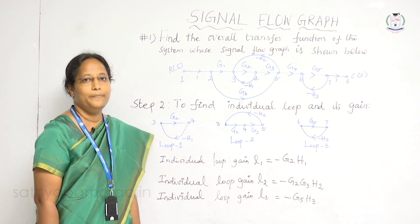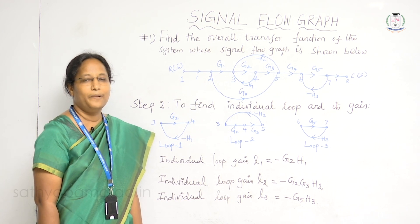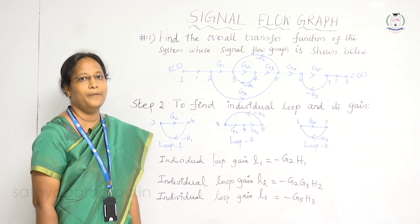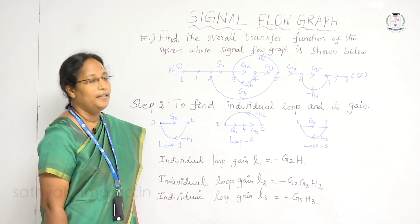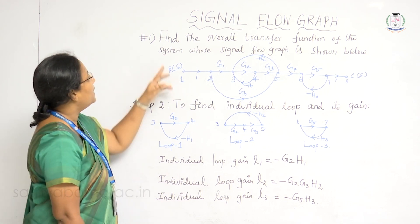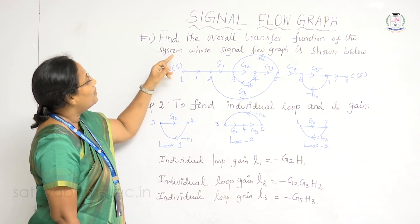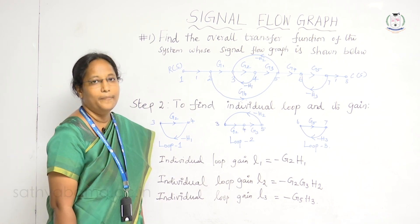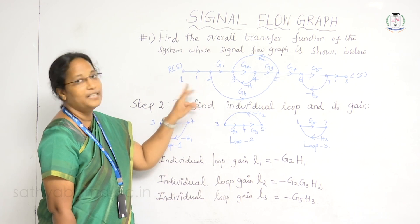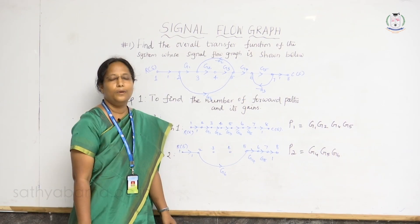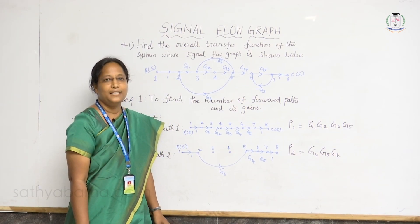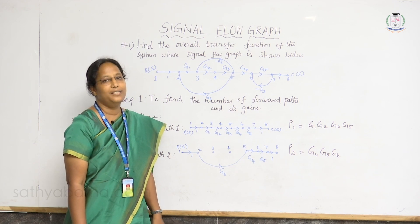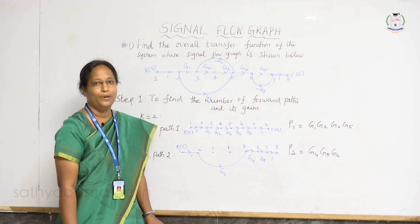With the help of one simple problem, I am going to explain the steps involved to find the overall transfer function from the signal flow graph. The problem says: find the overall transfer function of the system whose signal flow graph is shown below. This is the given signal flow graph. Before going into the steps, first I will explain the basic terminologies involved in this signal flow graph.